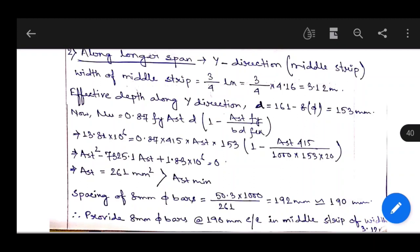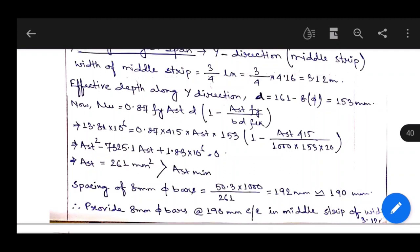190 mm will be the lesser value among 3d and 300 mm. We have to consider the least spacing value, so 190 mm will definitely be the least value. Therefore, provide 8 mm dia bars at 190 mm center-to-center in the middle strip of width 3.12 meters.